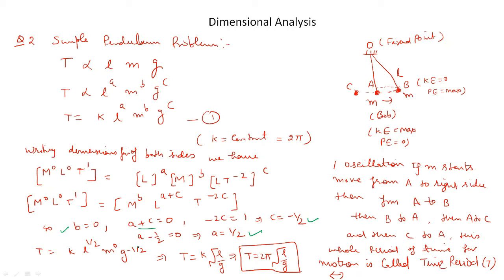The time period becomes T = K · L^(1/2) · M^0 · G^(−1/2), which simplifies to T = K · √(L/G). Since K = 2π, the time period of oscillation of the bob for a simple pendulum is T = 2π√(L/G), where L is the length of the string and G is acceleration due to gravity. Notice that the mass of the bob does not appear in the time period.